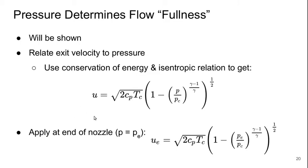And if we apply this to the end of the nozzle, where the pressure equals exit pressure, then the exit velocity is given like this. So in terms of the exit pressure and the combustion chamber pressure. It's really important to note here that this exit pressure, in general, is not the atmospheric pressure. That's only true if the flow is subsonic. In a supersonic flow, the exit pressure can be different than the surrounding atmospheric pressure.